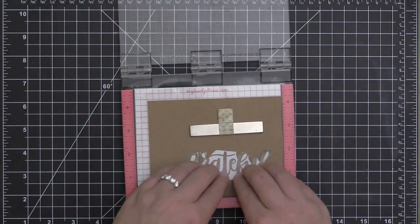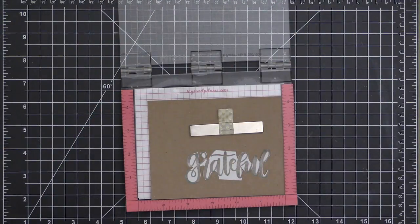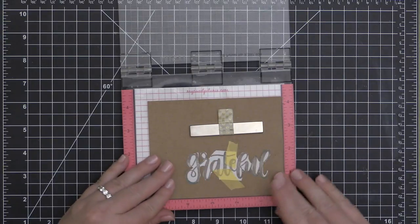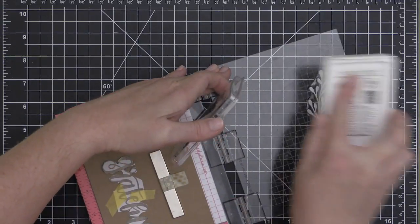I found that because this craft cardstock is a lot like a brown paper bag and has a lot of tooth, the mask didn't really want to stick—it wanted to stick to the stamp rather than the paper.